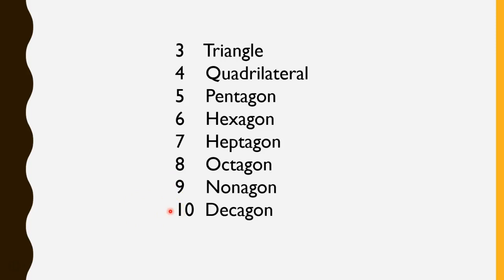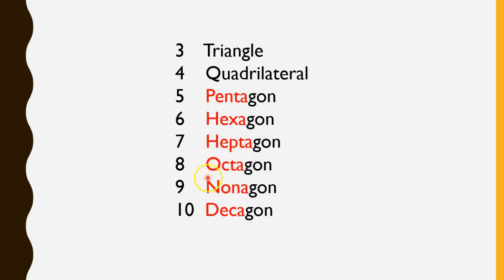Now these are probably fairly new words to you, and it might seem a little scary to try to memorize all of these. But we're going to spend a lot of time on this, and I have a fun little song that will help you. Take a look at something that is common with all of these bigger ones — they all end in the three letters 'gon.' So the only thing you need to look at is the beginning part, the prefix: penta means five, hexa means six, hepta means seven, octa means eight, nona means nine, and deca means ten.